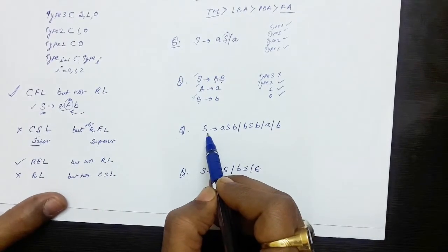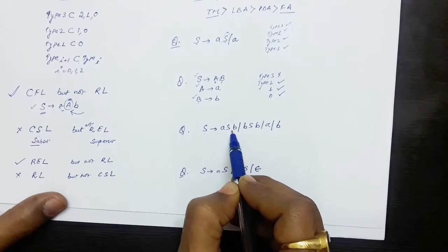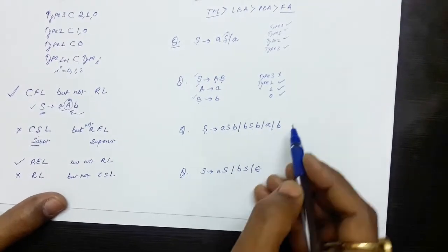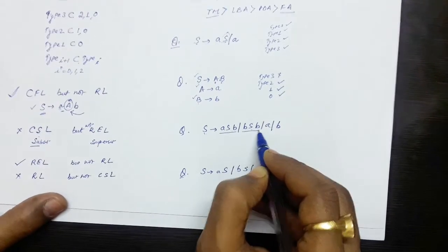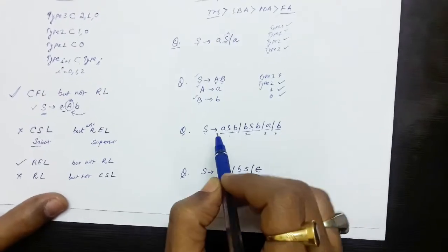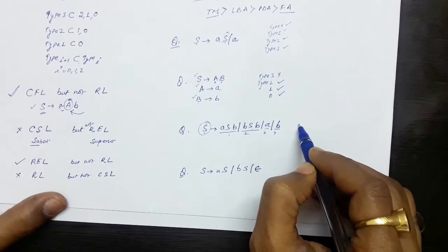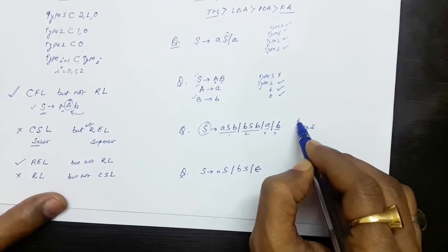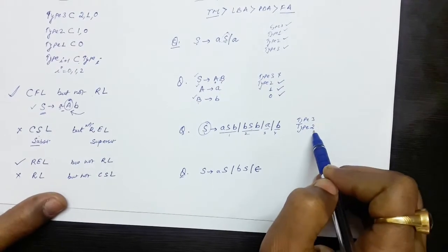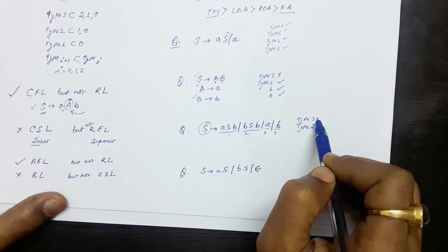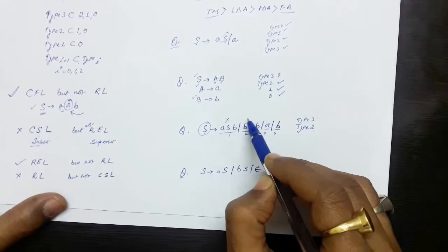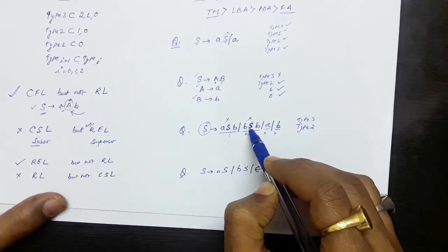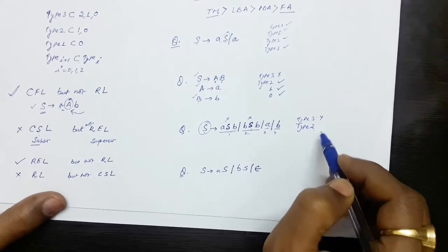Now this grammar: S produces ASB, S produces BSB, S produces A, and S produces B — four productions total. On the left hand side there is only one non-terminal symbol, so it is either Type 2 or Type 3. For it to be Type 3, the productions must be left linear or right linear. That is not true here because the non-terminal symbol is appearing somewhere in the middle — that is middle linear. A middle linear grammar cannot be regular or Type 3, so it is Type 2.